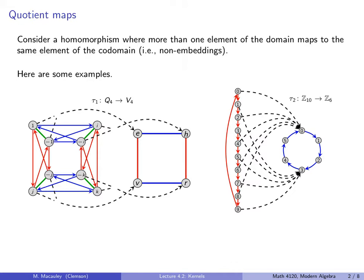Here are some examples. The one on the left is a homomorphism from the group Q4 — the quaternions — to the group V4. You can see that these two elements map to the identity, these two map to H, these two to V, and these two to R. It's easy to check that this is indeed a homomorphism, i.e. that tau of xy equals tau of x times tau of y.